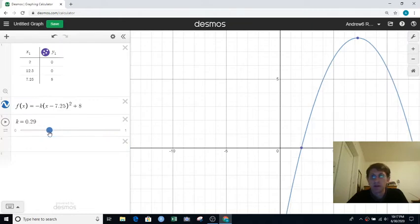0.29 looks pretty good. Now you're probably saying, wait, I know algebra. You could probably solve this to get the k value you need exactly without kind of messing with the slider.